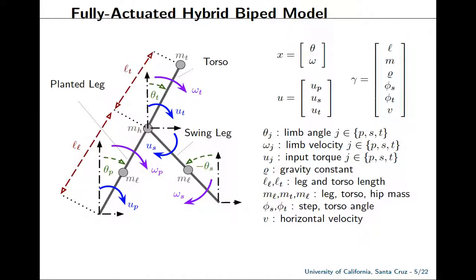We model a biped as a three-link fully actuated biped with a state consisting of the limb angles theta — which includes the planted leg angle theta_p, the swing leg angle theta_s, and the torso angle theta_t — and the limb velocities omega — which includes the planted leg velocity omega_p, the swing leg velocity omega_s, and the torso velocity omega_t.